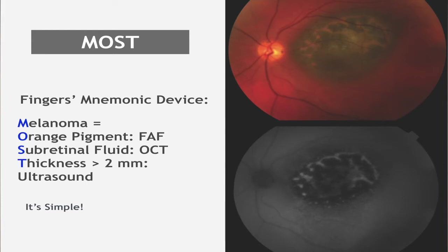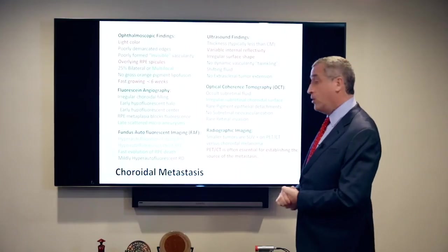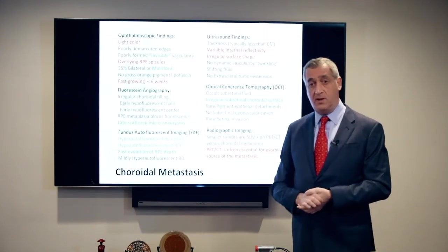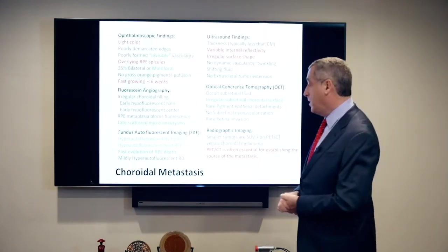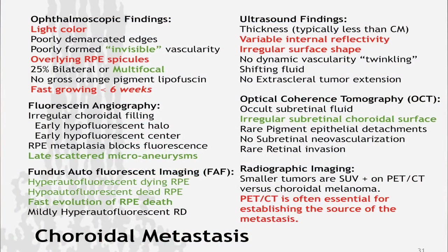Let's segue to the most common choroidal malignancy, though it's not primary — the most common choroidal malignancy is choroidal metastasis. I went through the same exercise and looked at all the findings ophthalmoscopically, fluorescein angiographically, fundus autofluorescent imaging, ultrasound, OCT, and radiographically.